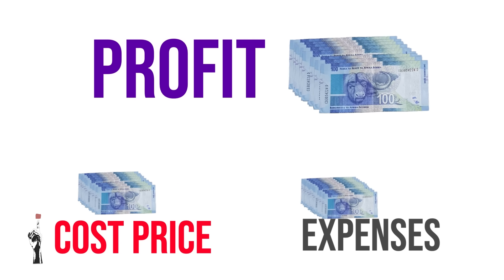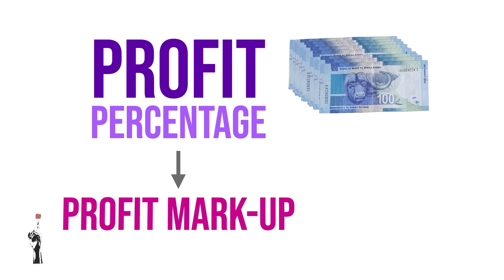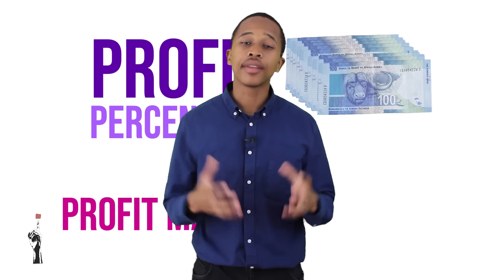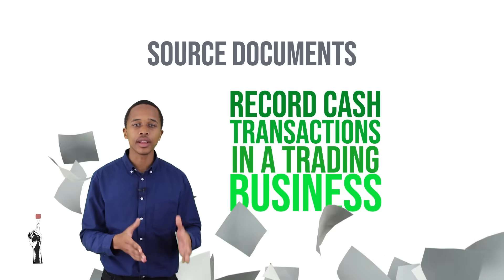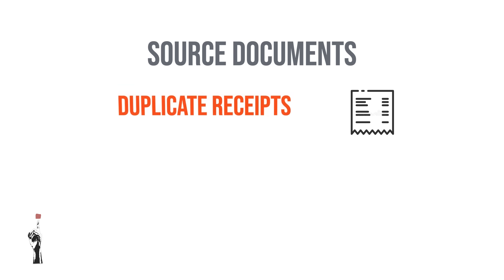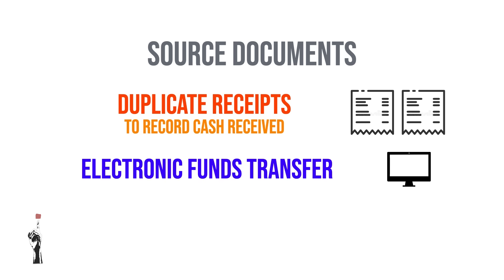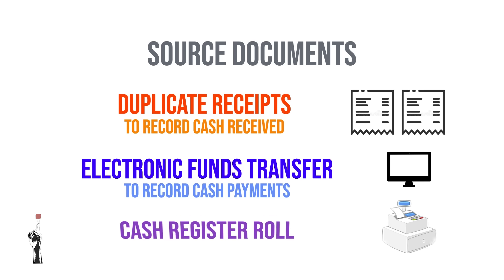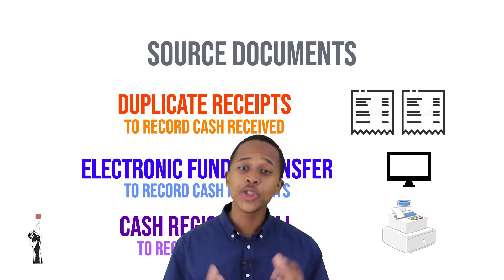The profit percentage is also referred to as the profit markup. In Grade 8, we covered source documents. The following source documents are used to record cash transactions in a trading business: a duplicate receipt to record cash received, an electronic fund transfer or EFT reference number to record cash payments, and a cash register roll to record cash sales.